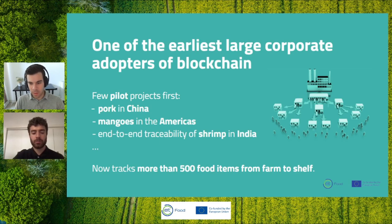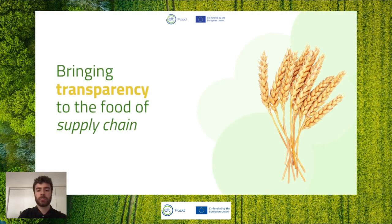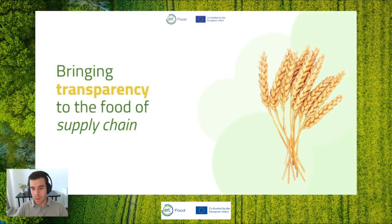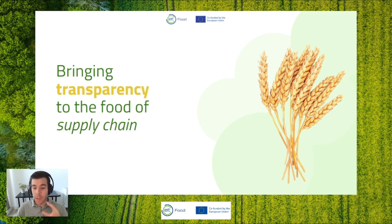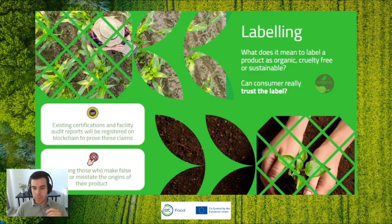Thanks Francesco for the great intro on how blockchain works and blockchain in the food supply chain. Now we're going to talk about bringing transparency to the food supply chain effectively. Francesco explained how blockchain creates trust through decentralization — there is no central entity controlling the data, so you can build more trust with your consumers. The first thing I'm going to walk through is some high-level examples.